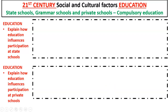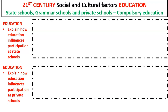Let's look at education. Education in 21st century Britain is very much present — there are three ways you can be educated: state schools, grammar schools, and private schools. Ultimately, education is compulsory. In the exam you need to explain two things: how education can influence participation at state schools, and how it can influence participation at private schools.